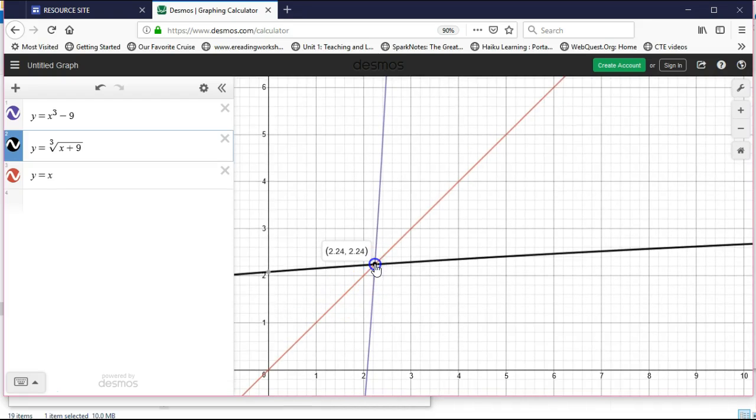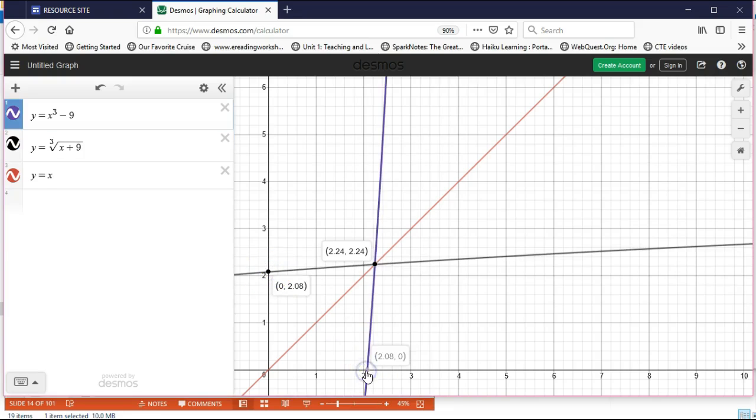So they both meet at this point here. As you can see here and here, these are both inverses of each other. The points are (0, 2.08) and (2.08, 0). So they are inverses of each other as you can see.